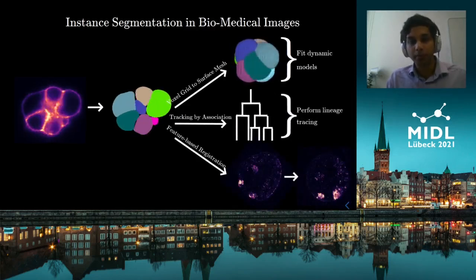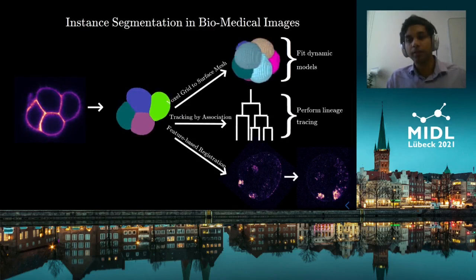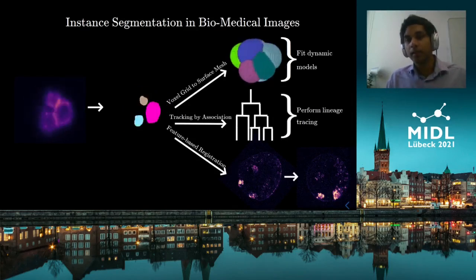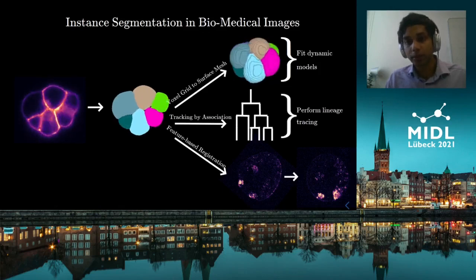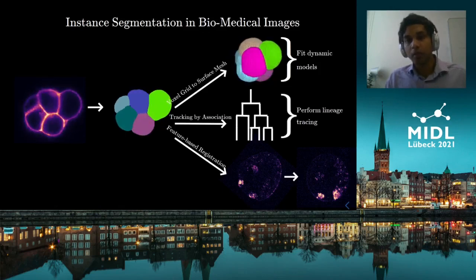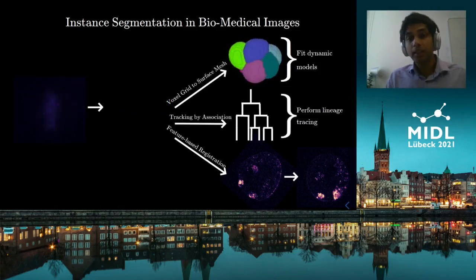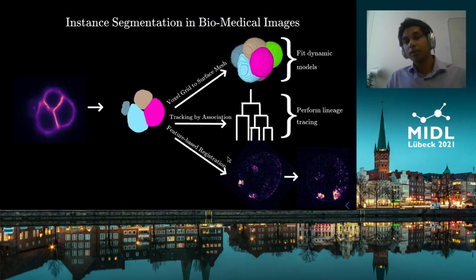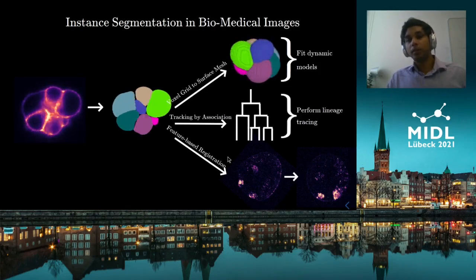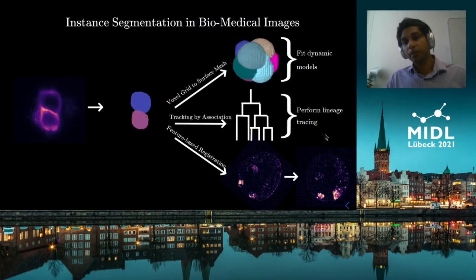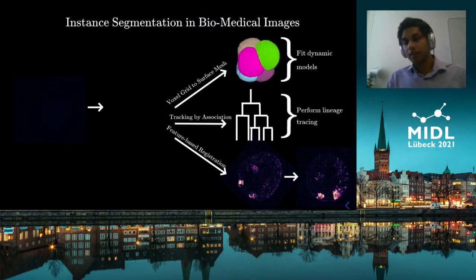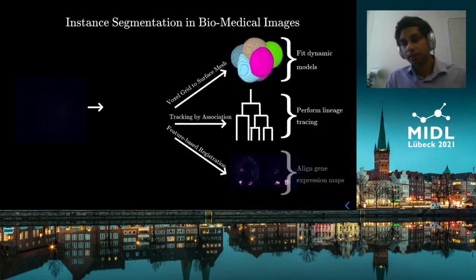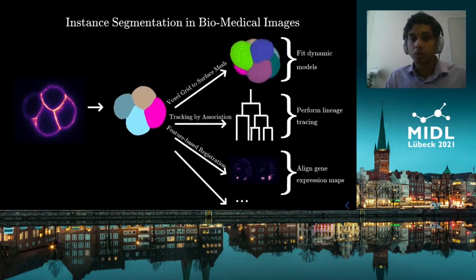Often we acquire images with multiple channels where the first channel carries some information of interest and the second channel has some secondary structures such as cells and nuclei on which we can perform instance segmentation. Then by using feature-based registration approaches on this second channel we can obtain the optimal transform between these two pairs of images and thus align gene expression maps.